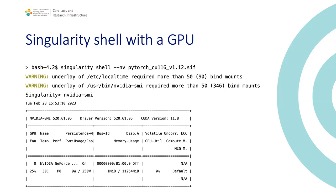GPUs are also available. Use '--nv' flag, which applies to run, exec, and shell subcommands. The '--nv' flag makes the container aware that GPU hardware resources are available and should be exposed. It is the responsibility of the image to have the CUDA stack. Importantly, the GPU drivers are also exposed inside the container from the host — this is the kernel-level sharing. nvidia-smi is not part of the container; it comes from the host.